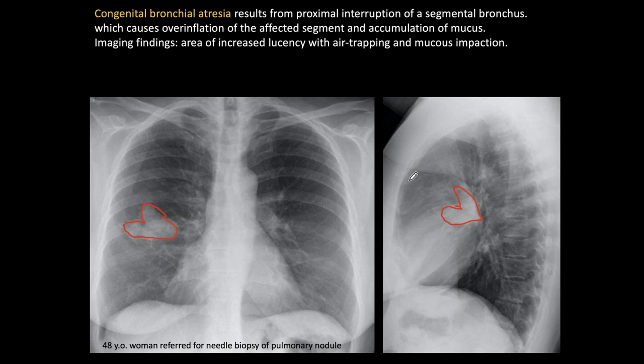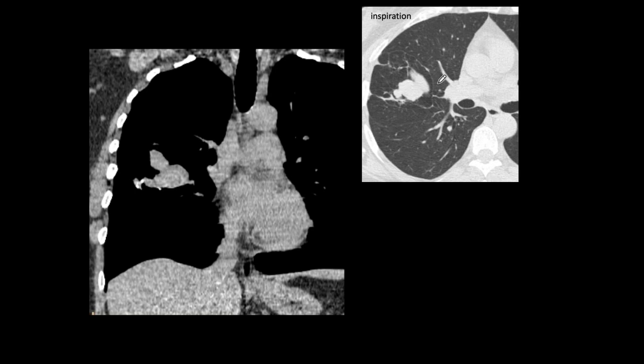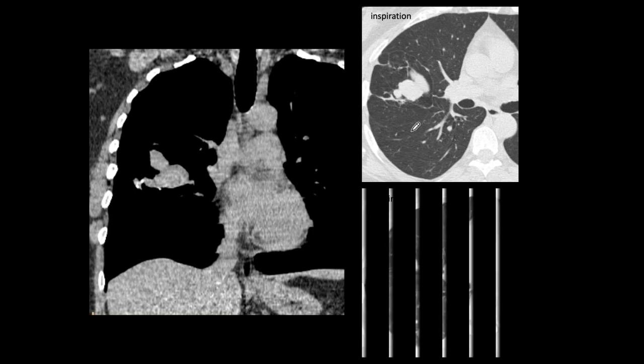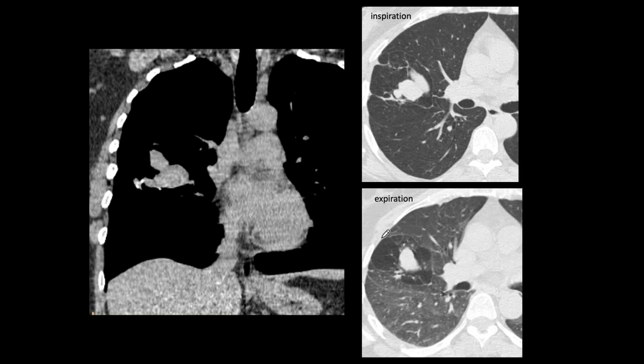The same typical mucus impaction appearance is seen on the lateral view. Therefore this apparent nodule was not biopsied — instead a CT was done. On CT the mucus impaction is confirmed with calcification, which is common in mucus. In the lung window on the inspiration view we see a hyperlucent lesion with mucus impaction inside, and on the expiration view we see air trapping with increased lucency and the mucus impaction in the center. This is practically pathognomonic of congenital bronchial atresia.